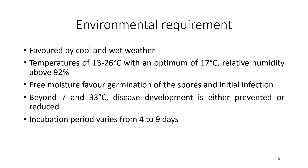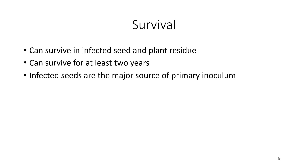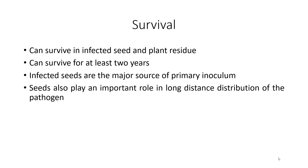Incubation period varies from 4 to 9 days. Survival: The anthracnose pathogen can survive in infected seed and plant residues. It is mainly a seed-borne disease. It can survive for at least 2 years in infected seeds and plant residues or in the soil. However, given favorable environmental conditions, it has been recorded to survive up to 5 years in the soil. Infected seeds are the major source of primary inoculum and play an important role in long-distance distribution of the pathogen.